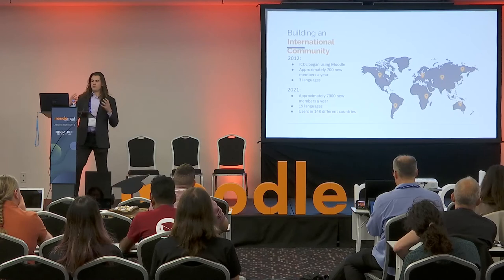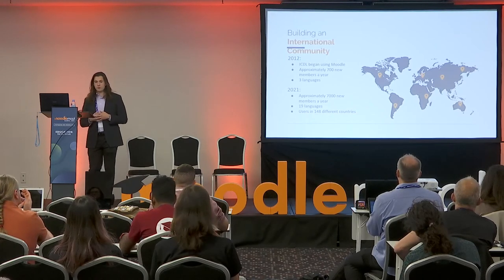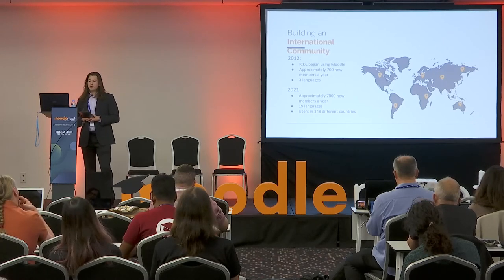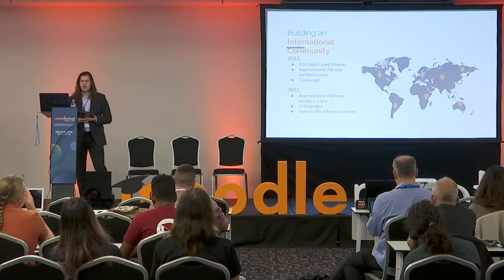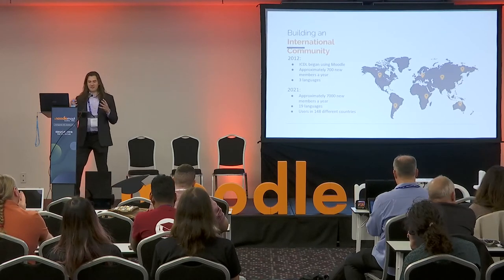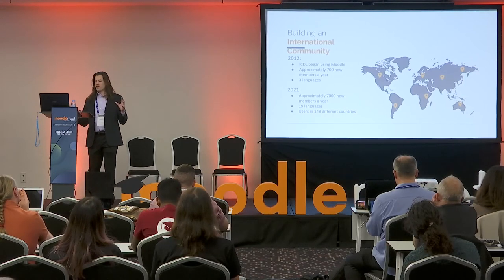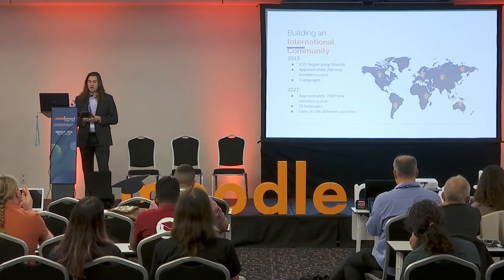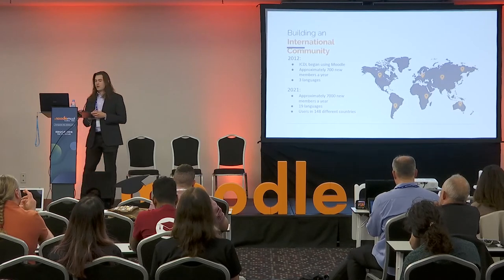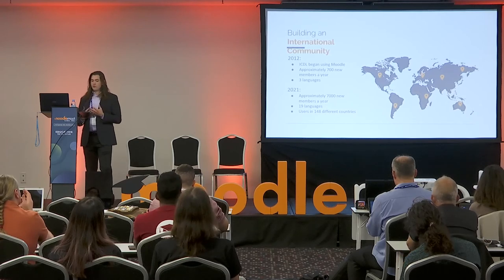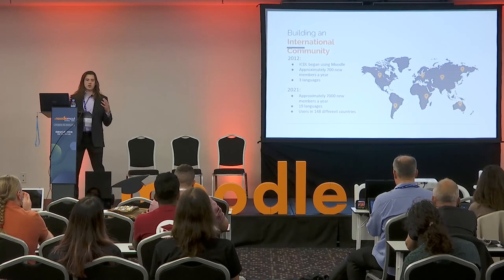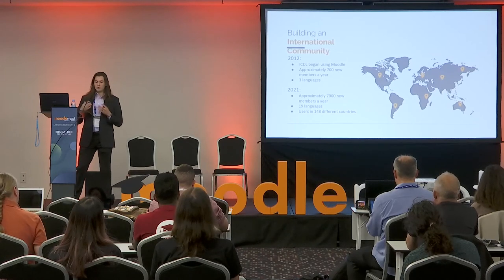I want to put in perspective how we built our international community. In 2012, we started using Moodle. At that time, we were getting about 700 new users each year and teaching courses in three languages. By 2021, we gained approximately 7,000 new users, taught courses in 19 different languages, and have users in 148 different countries — that's three-fourths of the entire world. The fact that a small, albeit growing, not-for-profit can reach such a broad range is remarkable, especially in areas where many cultures don't necessarily accept neurodiversity as much. We can promote neurodiversity and inclusion all across the world with ease through our system and methods, and really spend time focusing on our mission and building a global audience.